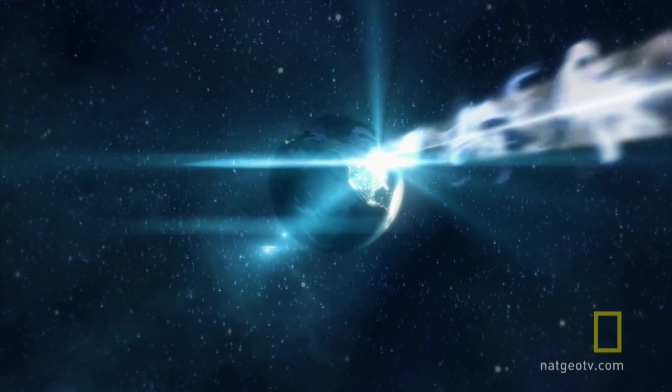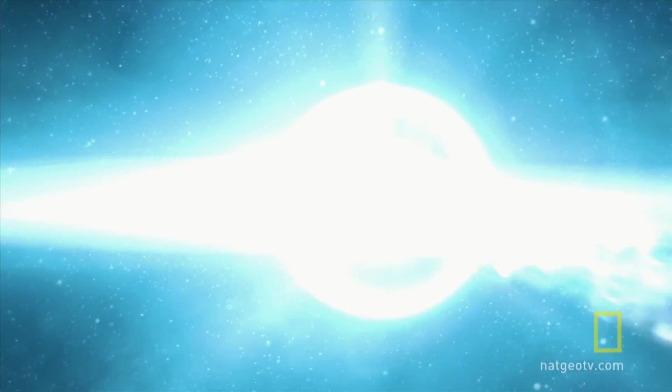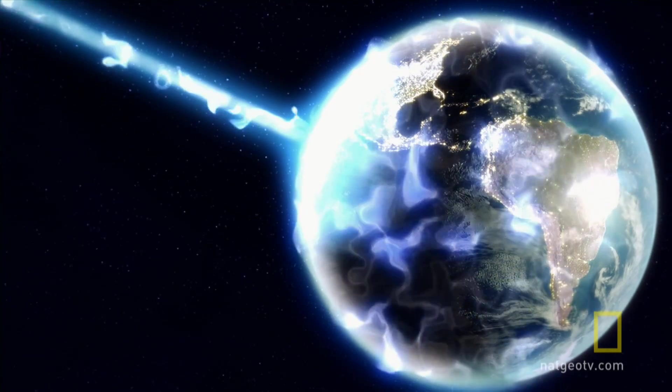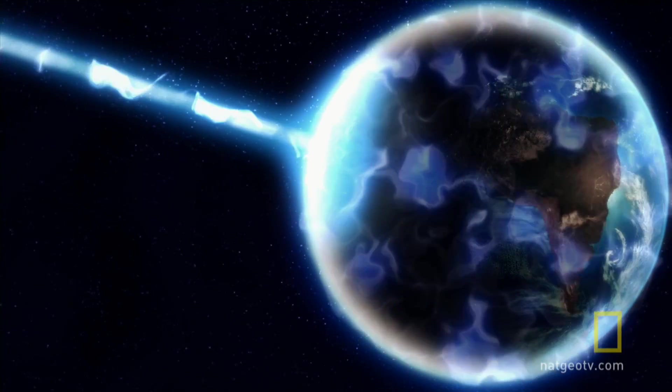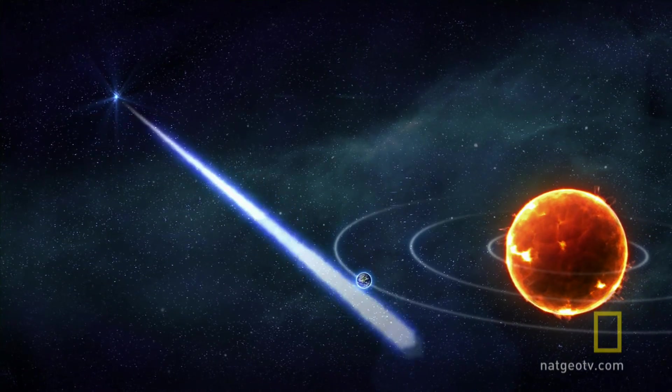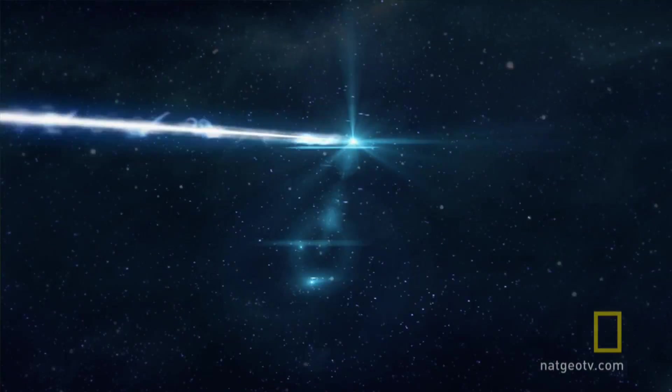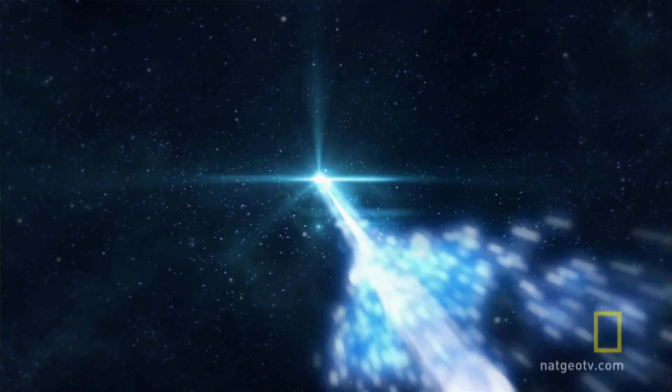Almost all living things would die within hours, and then the planet could cool so rapidly it would trigger a new ice age. Luckily, Eta Carinae's line of sight is tilted about 45 degrees off the path of Earth. So its deadly gamma ray burst would be a near miss, and we dodge a bullet.